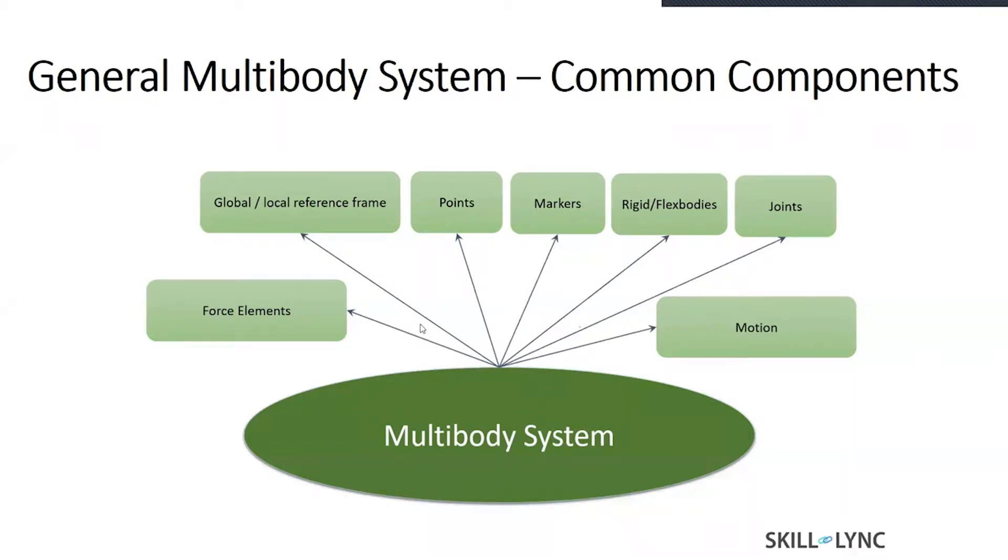They require force elements, a reference frame which is also a coordinate system, hardpoints, markers to define the location and orientation of an entity, and the bodies—either a rigid body or a flexible body—and then the constraints which are nothing but joints and the motions. All these components are the building blocks in constructing an MBD model.